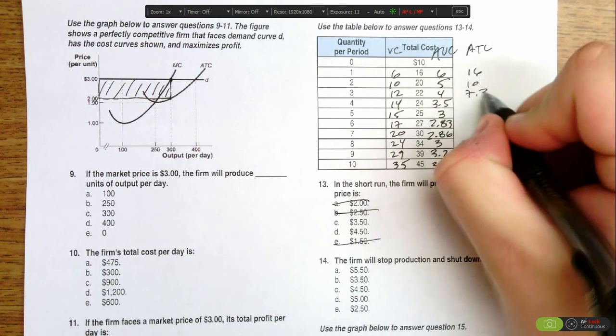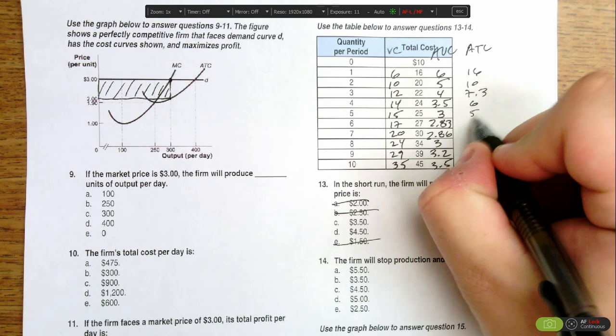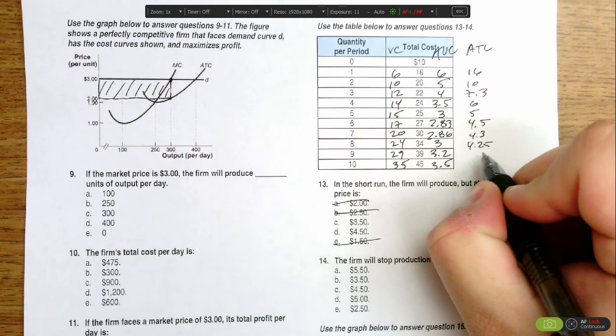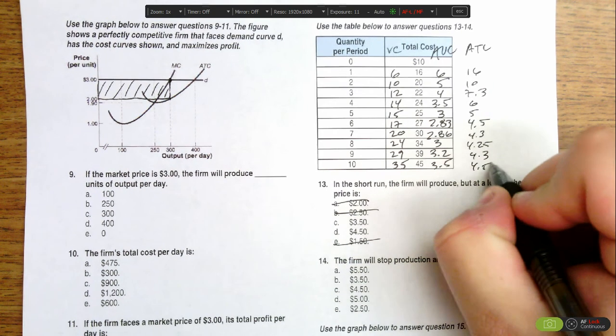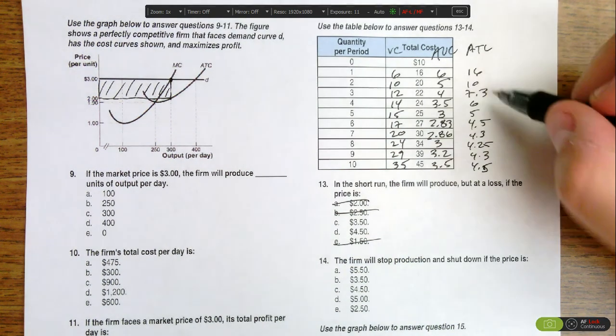If you keep doing the math, you get $7.33, $6.50, $5, $4.50, $4.25, and $4.29. So the minimum point of average total cost, which is our break-even price, is $4.25.